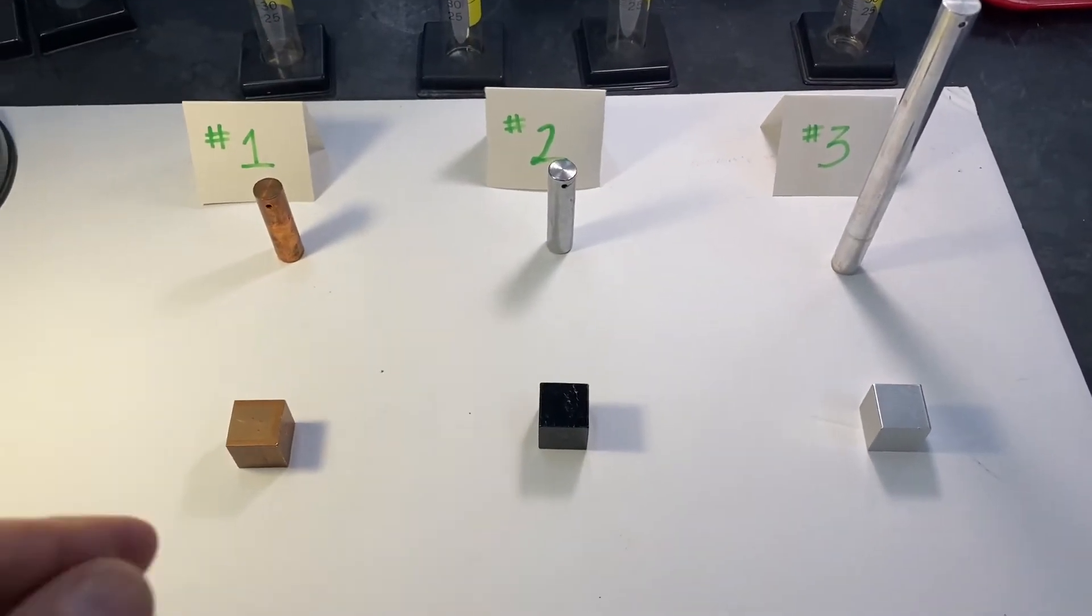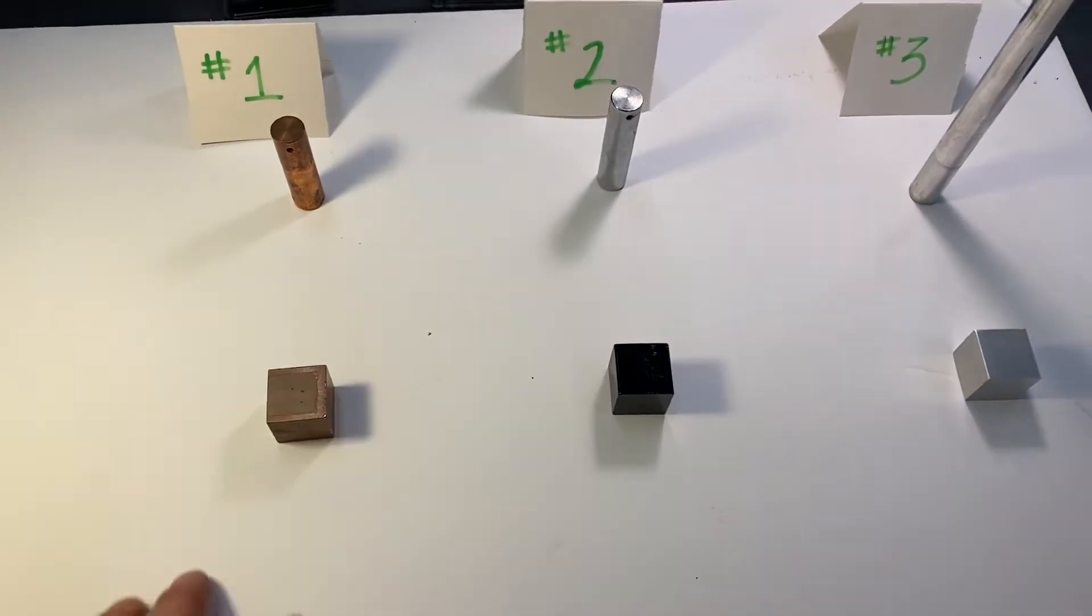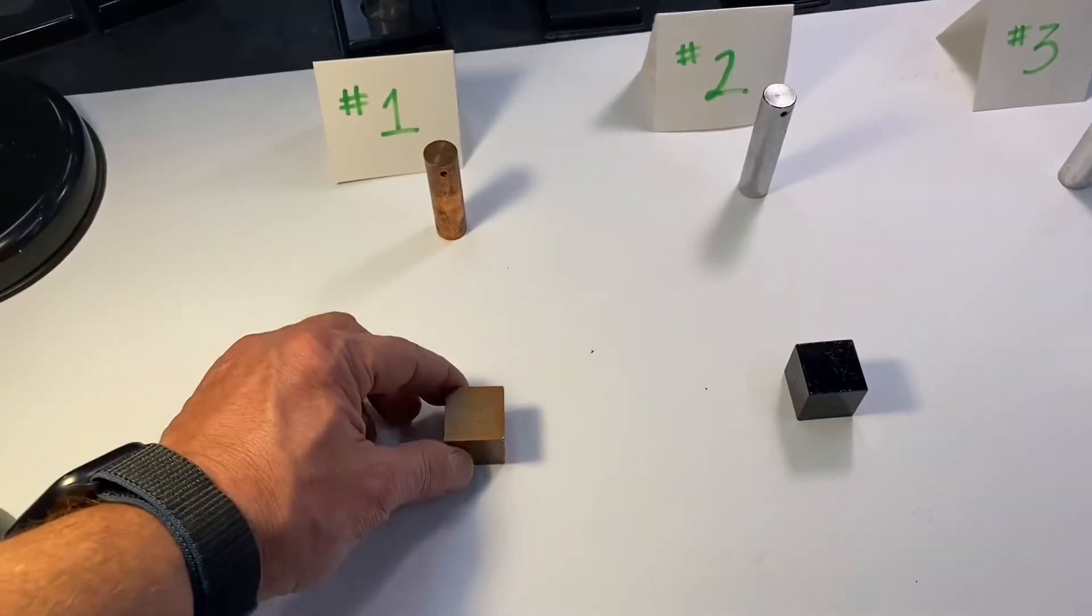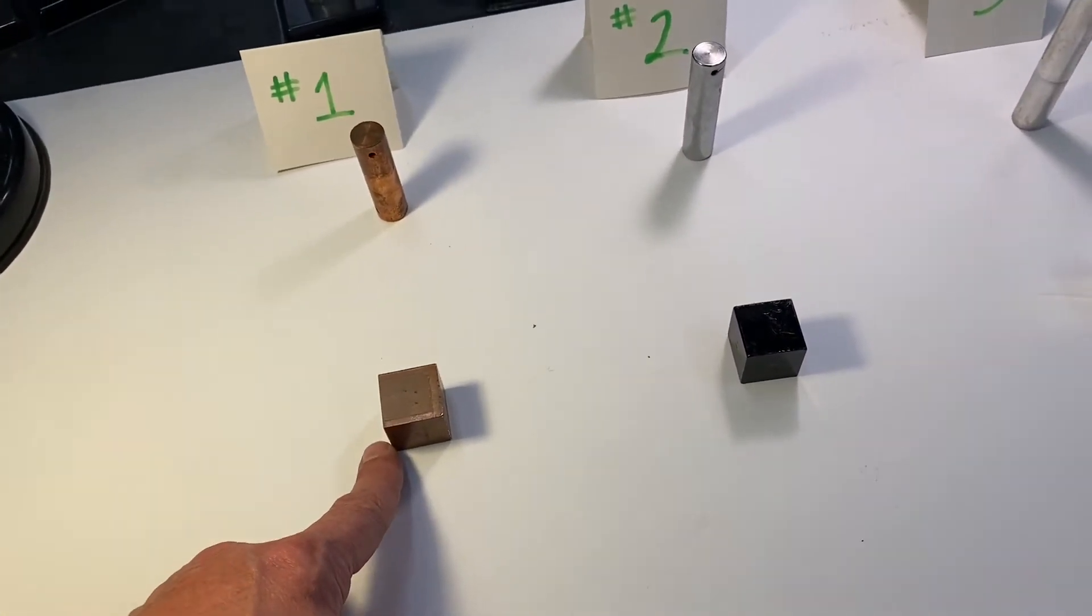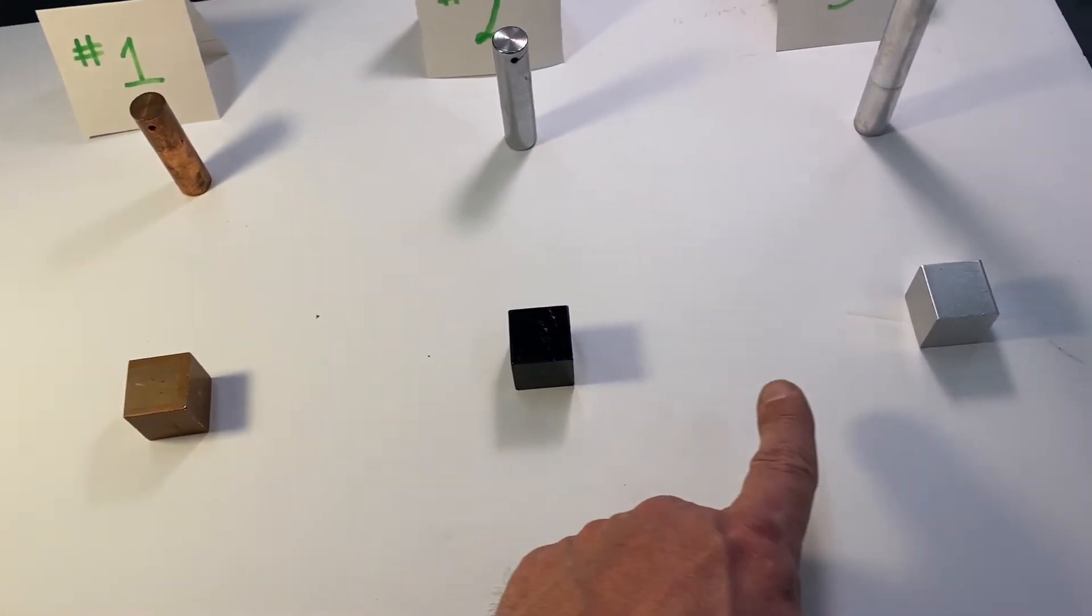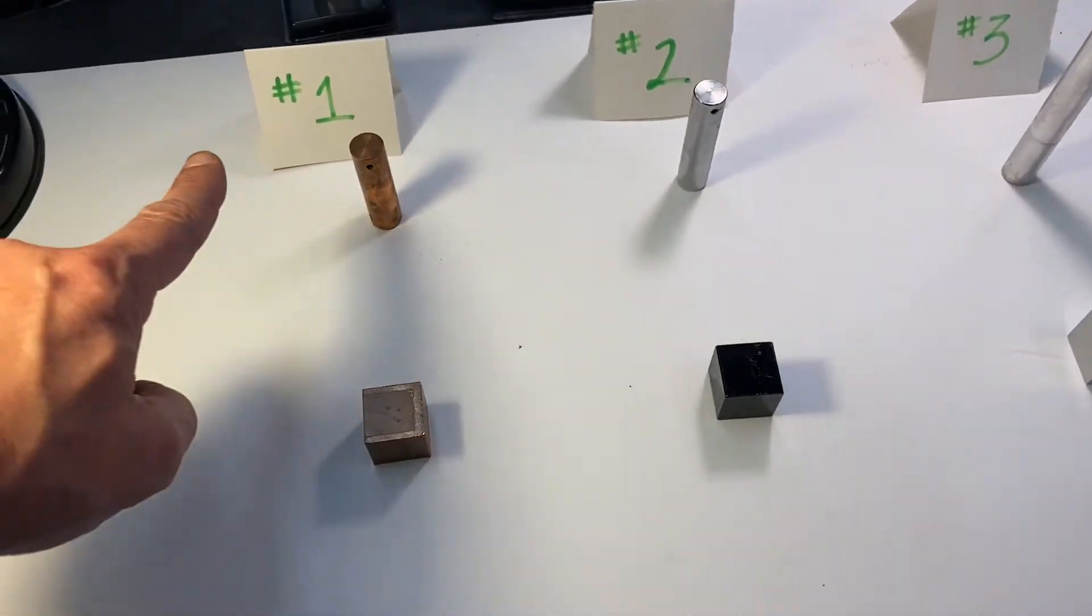These are three different metals, samples of three different metals. These are all cubes of the same volume. These are cubes, and these are cylinders